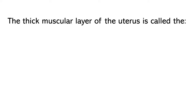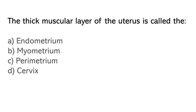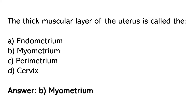The thick muscular layer of the uterus is called: A) Endometrium, B) Myometrium, C) Perimetrium, D) Cervix. So the correct answer is option B. The thick muscular layer of the uterus is called myometrium.